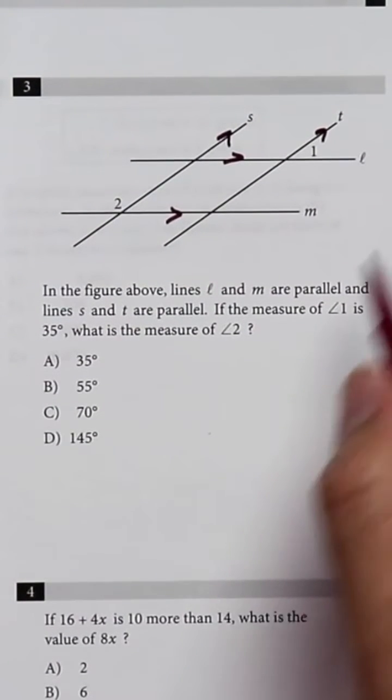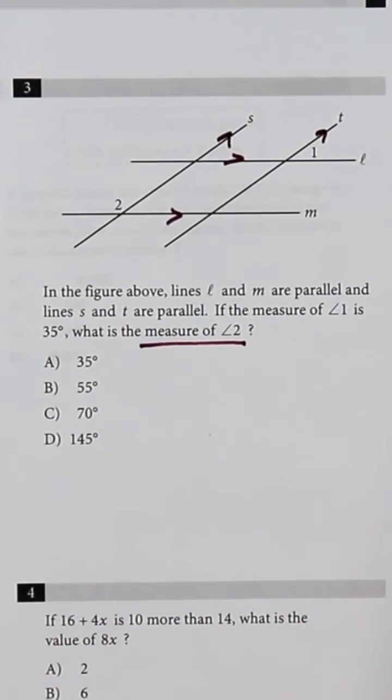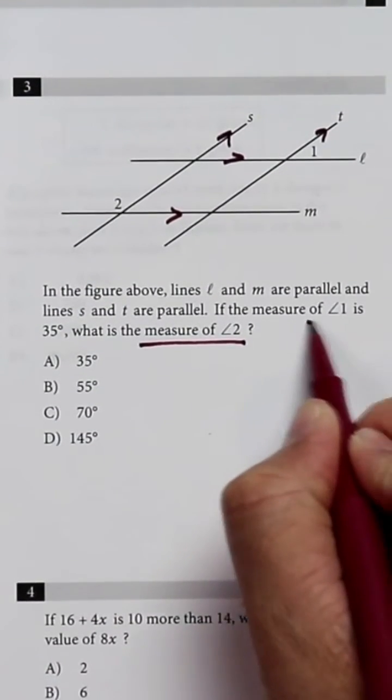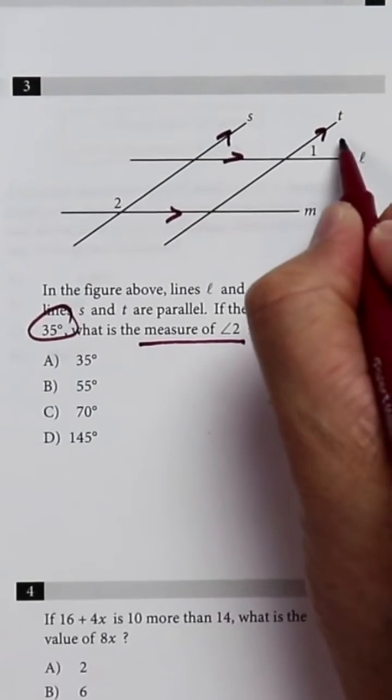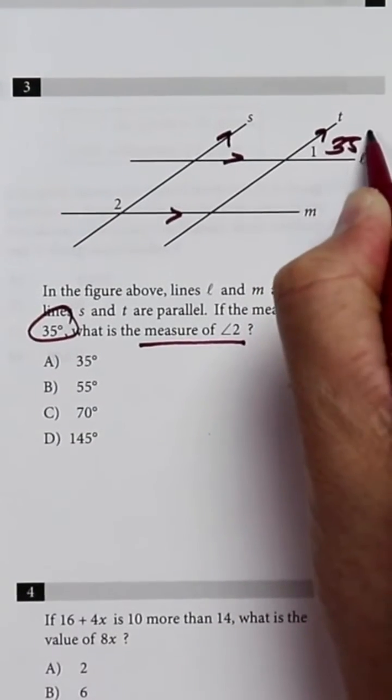We're looking for the value of the measurement of angle 2 when the measurement of angle 1 is equal to 35 degrees.